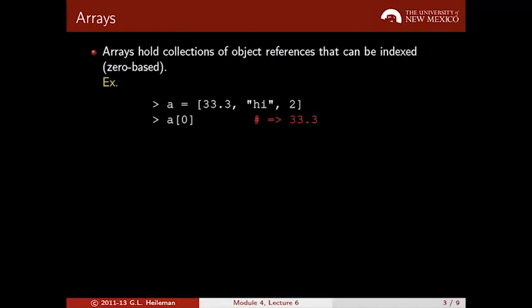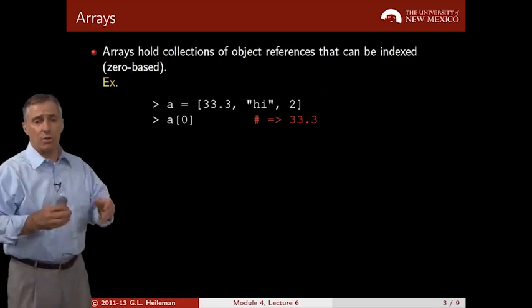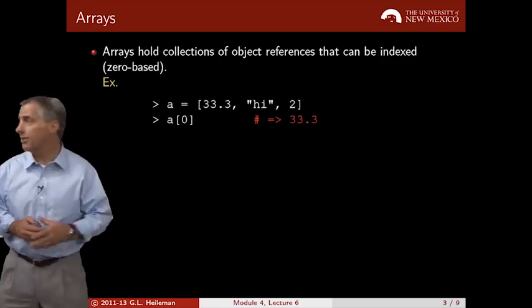With arrays, you can store different types of elements. Here's an example. If you open up IRB and type a equals, the square bracket is how you open an array, then close it with the closed square bracket. Notice in this case, this is a non-homogeneous array. I've got a decimal value, a string, and an integer value. If I index into the first location, a[0], that gives me 33.3, which is the first thing in the array.